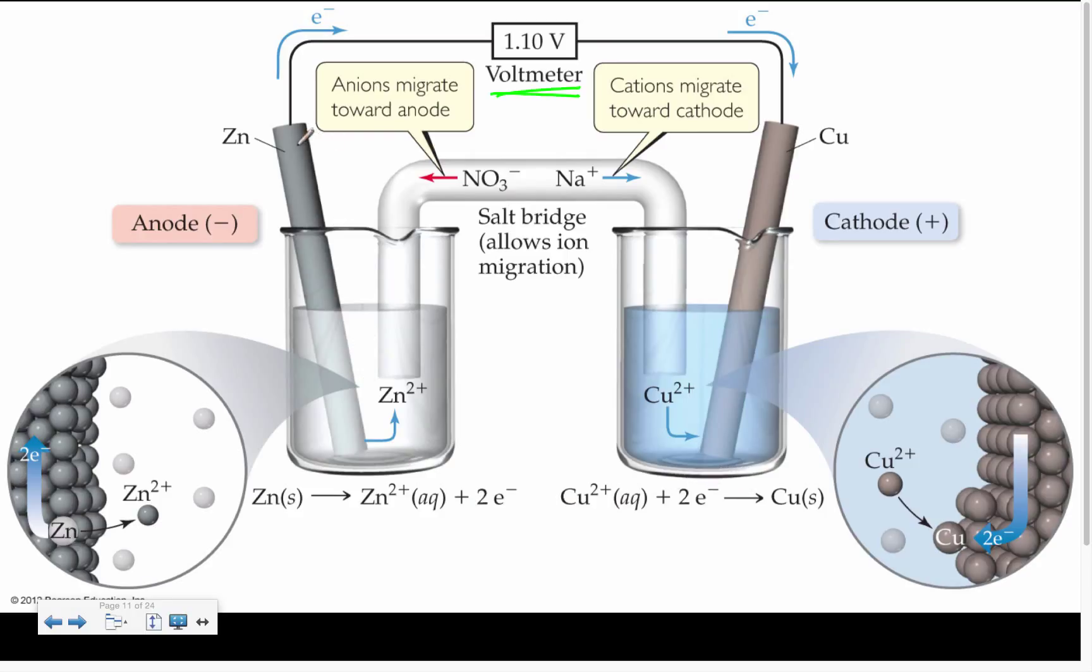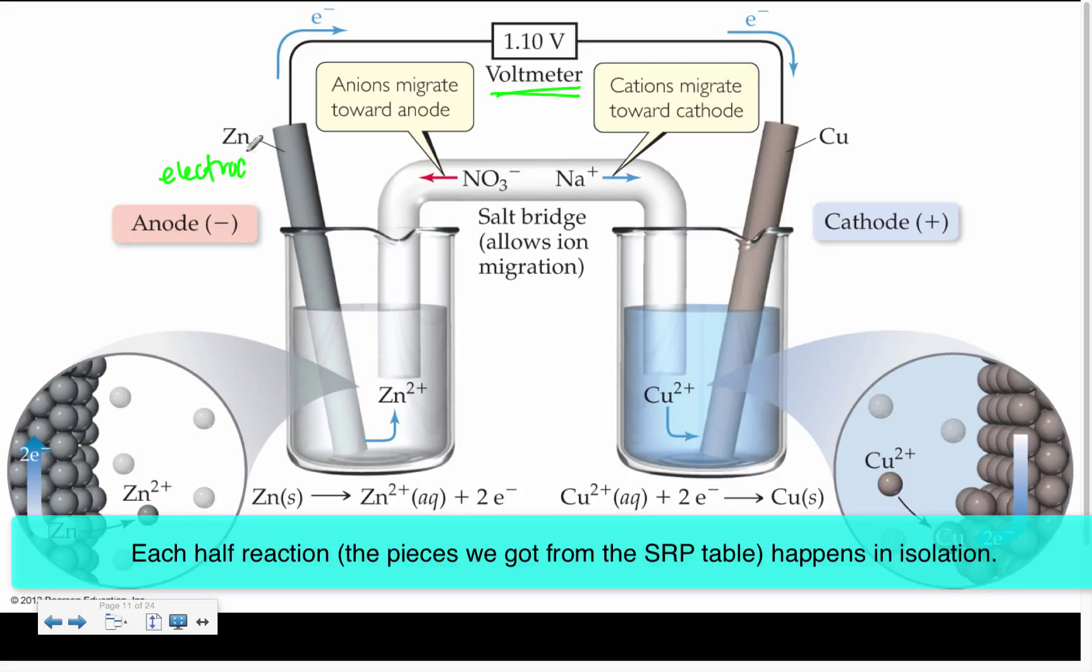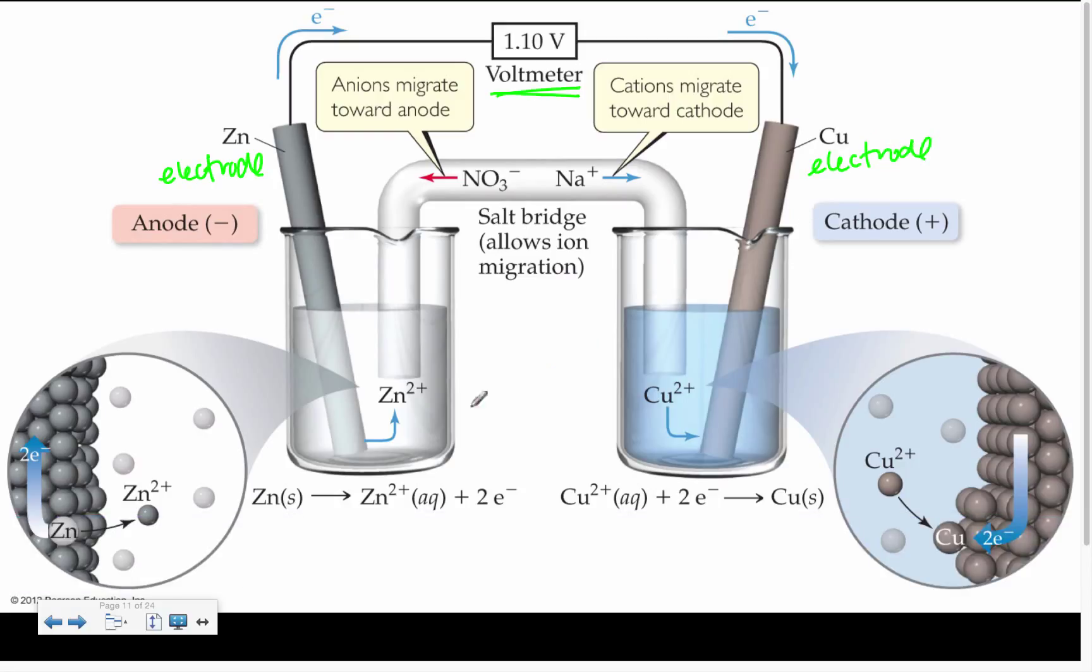Here we have a zinc electrode, and here we have a copper electrode. Here we have a solution that contains zinc 2+ ions and a solution that contains copper 2+ ions. This is one of these standard setups where we have an electrode and its accompanying solution, so that we can have the reduction or the oxidation occurring as needed in each cell.